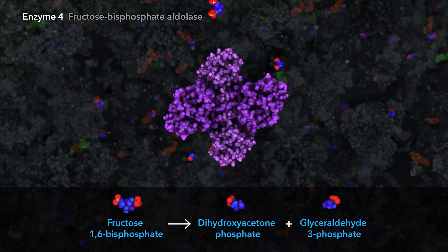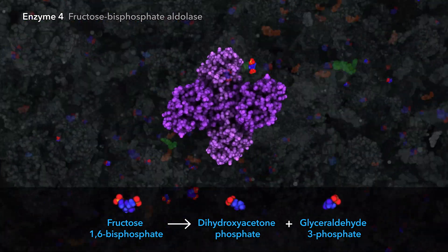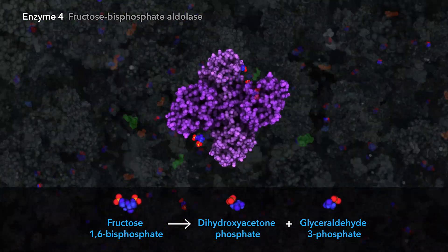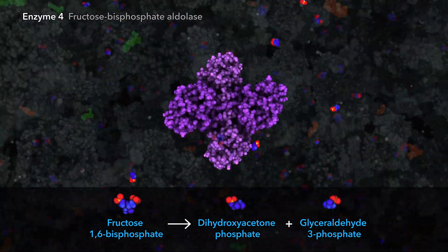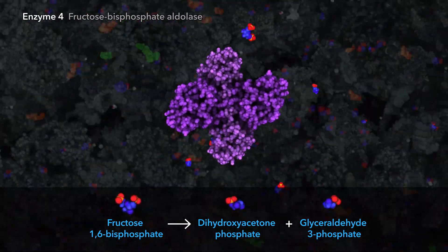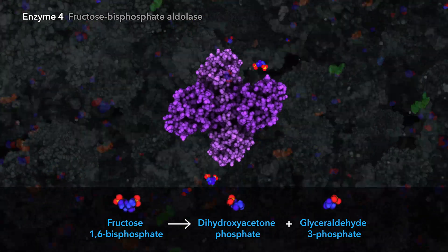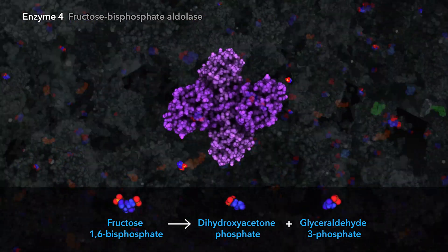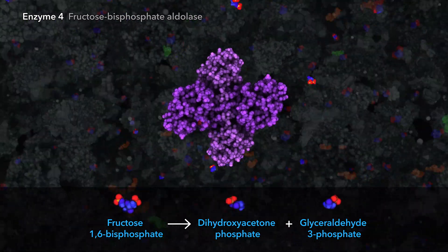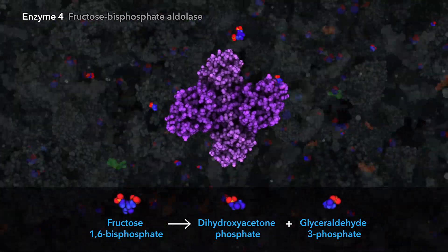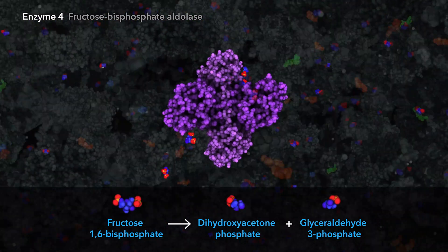The fourth enzyme cuts the molecule in half, creating two three-carbon sugars, each with a single phosphate attached. The sugar products are isomers of each other, but only glyceraldehyde-3-phosphate is ready to continue with glycolysis.